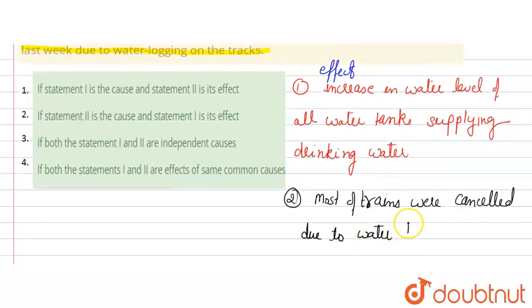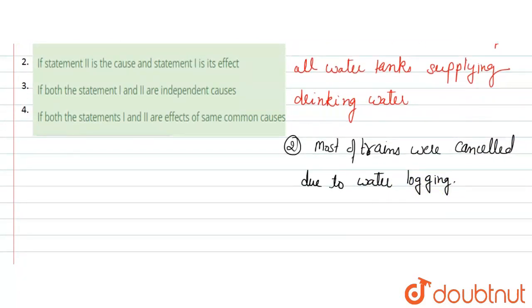When many trains got cancelled due to water logging, there must have been heavy rainfall. So both have the same cause - heavy rain.